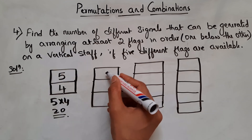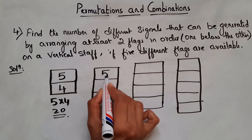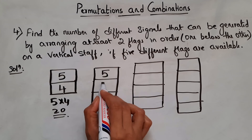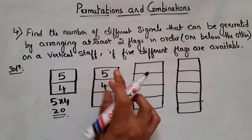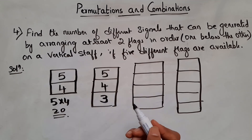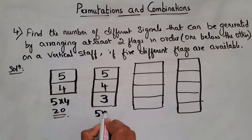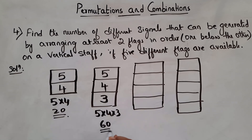With 3 flags: the positions give 5, 4, and 3 ways — so 5 into 4 into 3 is 60 ways. With 4 flags: 5 into 4 into 3 into 2 is 120 ways.